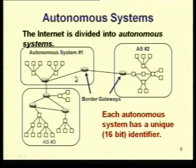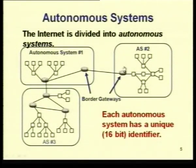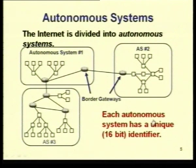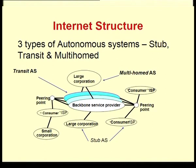Within an autonomous system, because it is within one administrative domain, you can have your own routing protocol to go from one network to another. But to go from one autonomous system to another, we have devices called border gateways. We also need a protocol to move between autonomous systems. Each autonomous system is given a unique identifier so you can identify which autonomous system you need to reach.